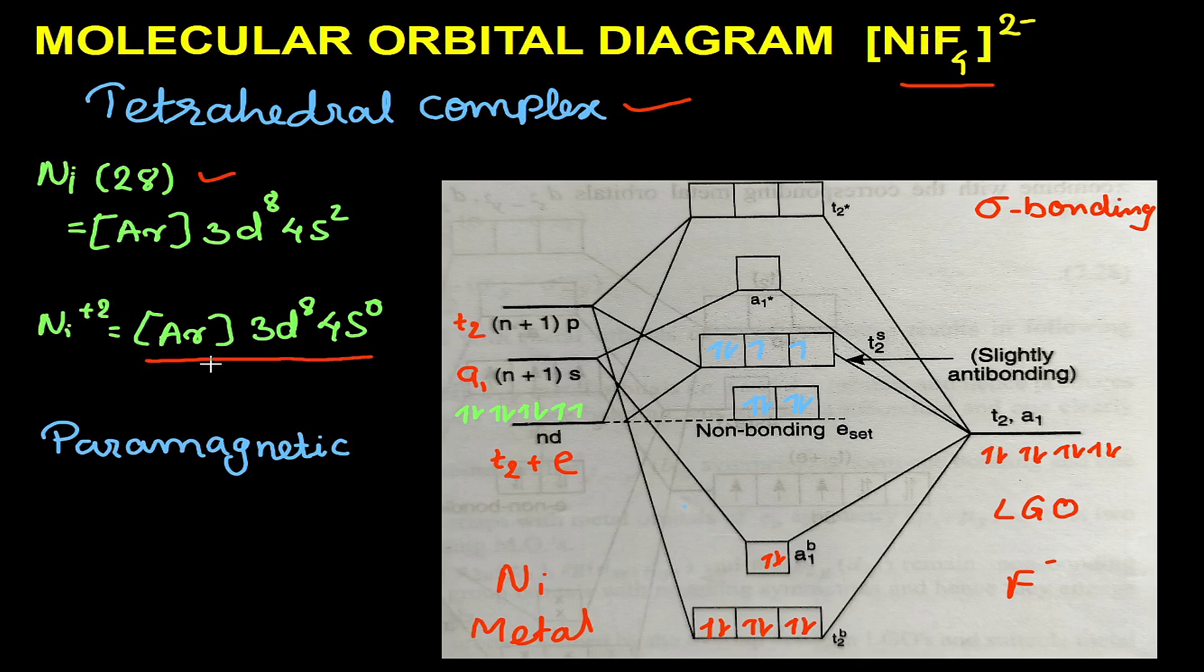The electronic configuration of Ni²⁺ ion will be [Ar] 3d⁸ 4s⁰. This is the typical sigma bonding MO diagram of the complex. The orbitals involved are nd orbital—the d orbital splits into t₂ and e. As the tetrahedral complex does not have a center of inversion, the terms gerade and ungerade are not used.